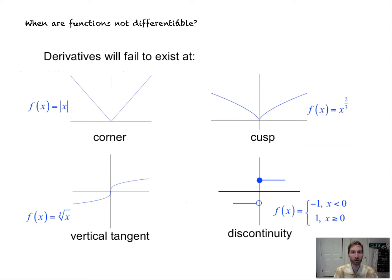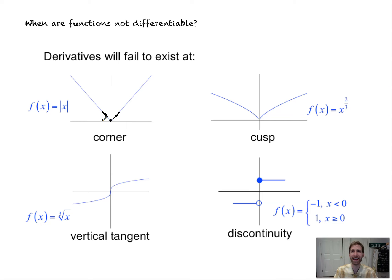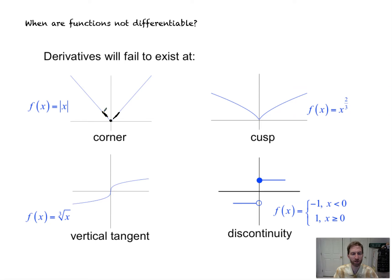When are functions not differentiable? Derivatives will fail to exist at a corner. At this point right here, notice that the slope of the tangent line from the left is negative, and the slope as we approach this x value from the right is positive. So our slopes are different coming from both directions, so that is not differentiable there. You could also think of it as putting a tangent line on that corner would be like a teeter-totter or a seesaw. The formal way: the derivative from the left — the slope from the left — is not equal to the slope from the right.